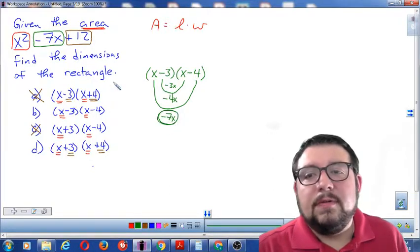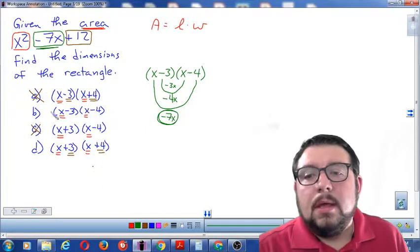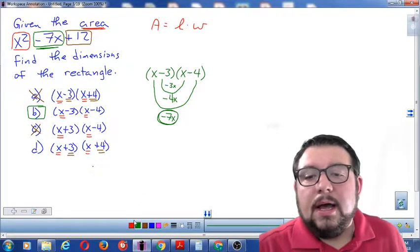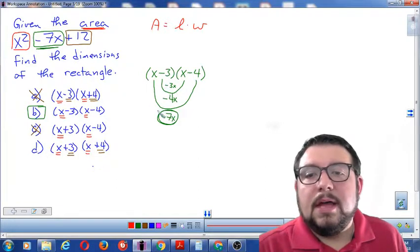And I can see that that is a perfect match for my middle term. And therefore, B is my correct answer. And the reason it's correct, again, is because I checked the first term with the first term, the last term with the last terms, and the middle term with the smile method. So B must be correct.